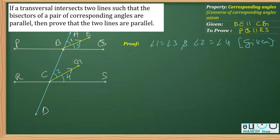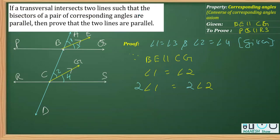Since BE is parallel to CG and AB is the transversal, I can write angle one equals angle two. Now, multiplying both sides by two — why two? Because to prove PQ parallel to RS, I must prove the full angles at B and Q equal. Angle one equals angle three and angle two equals angle four.